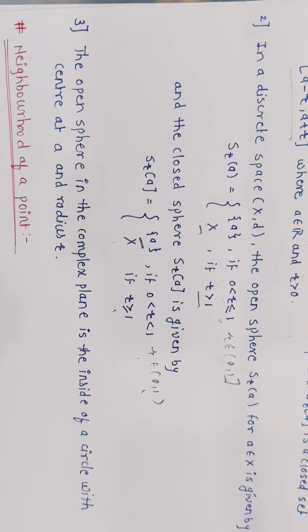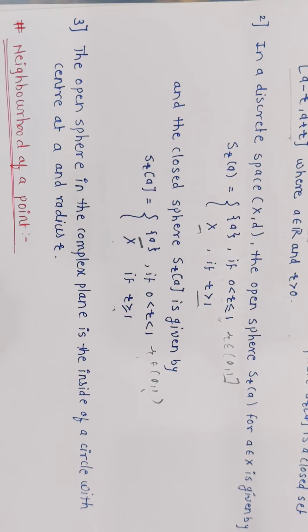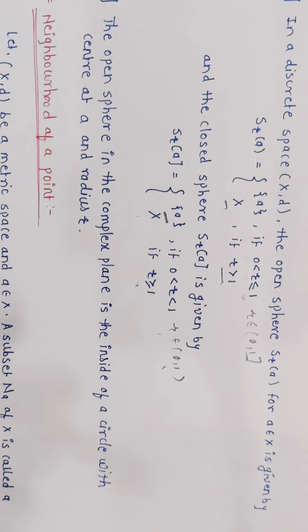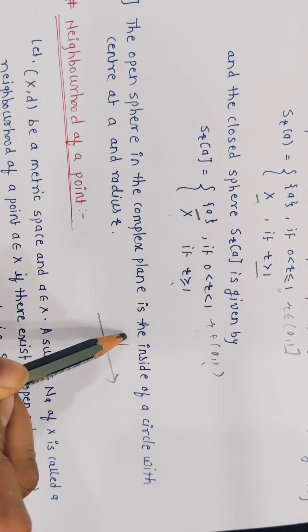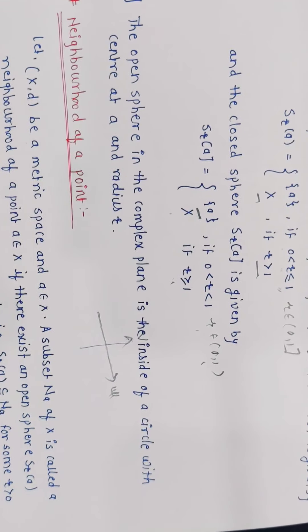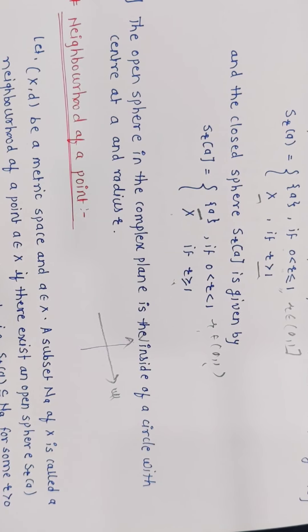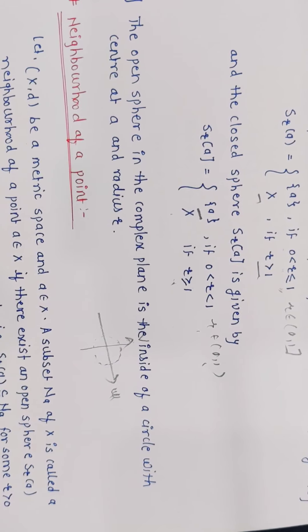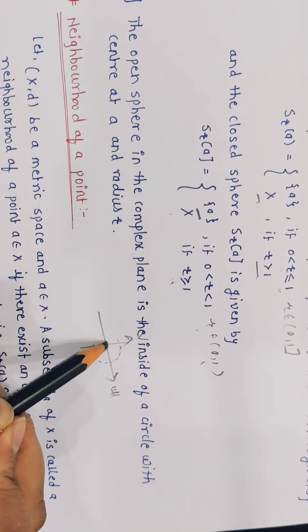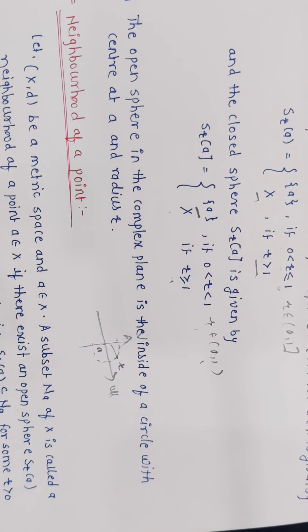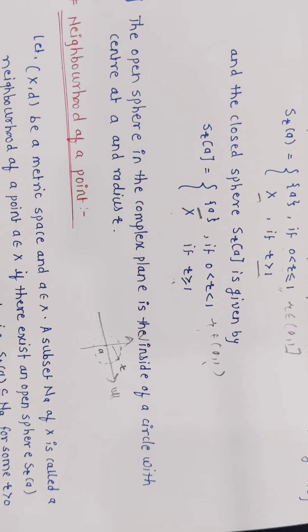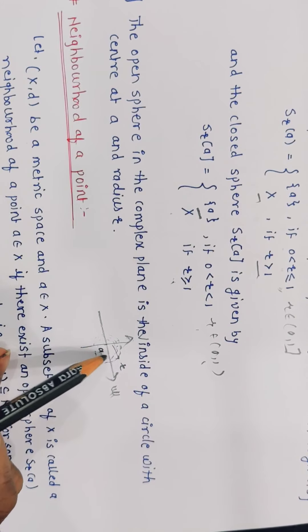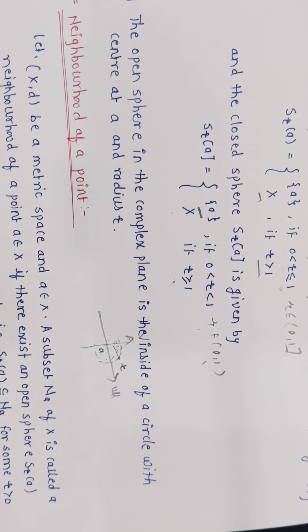Next remark: the open sphere in the complex plane is the inside of a circle with center at a and radius r. Suppose this is a complex plane with axes U and V. If we take a set in this form, the open sphere will be the interior of the circle with center A and radius r. So the points inside the circle — that interior part — will be the open sphere.